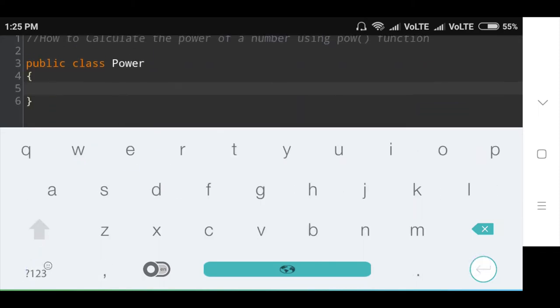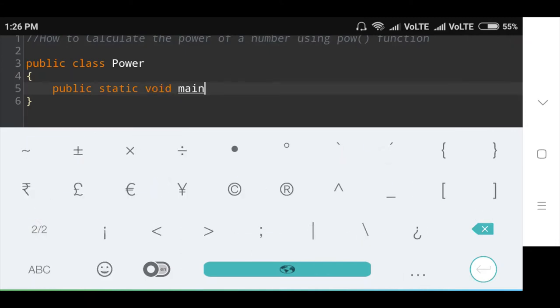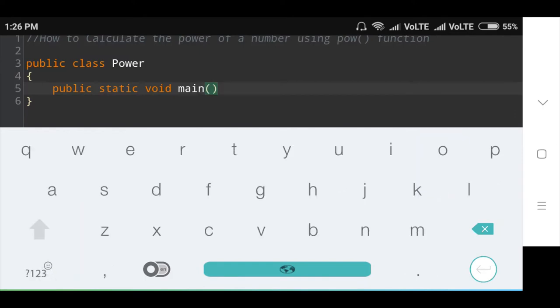Inside this class I will create the main method: public static void main, in bracket String args.